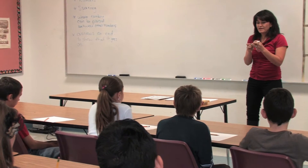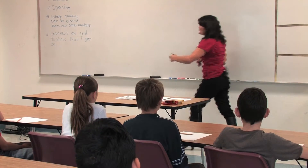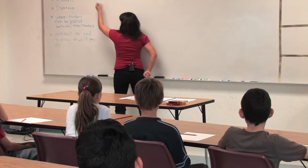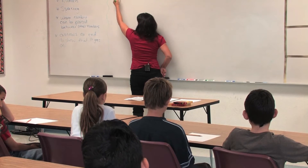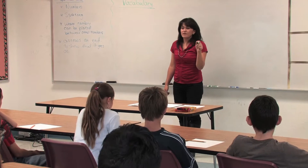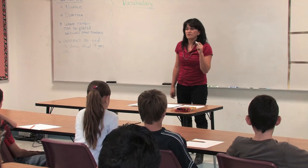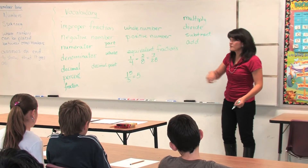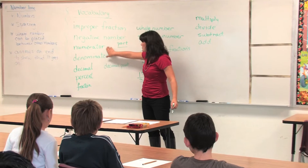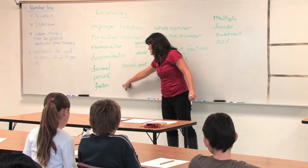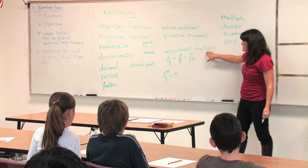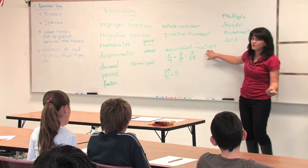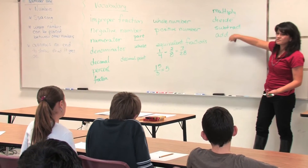So now we have our vocabulary — this is what you thought the number line was, but this video also has a ton of math vocabulary. In that two-minute video, look at all the vocabulary we gathered: improper fraction, negative number, numerator, denominator, decimal, percent, fraction, decimal point, whole number, positive number, equivalent fractions — and you can also include the four operations: multiply, divide, subtract, and add.